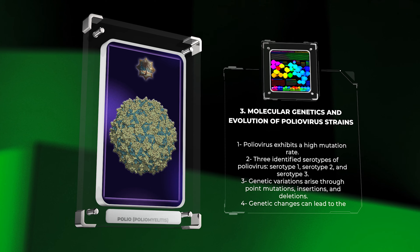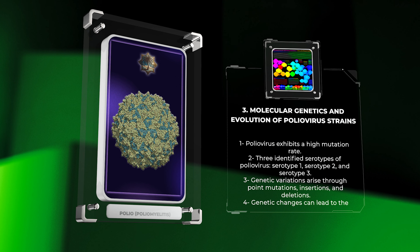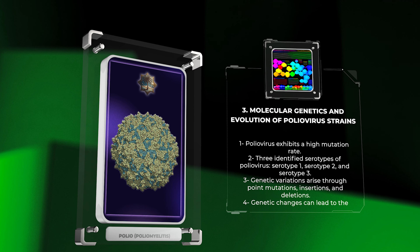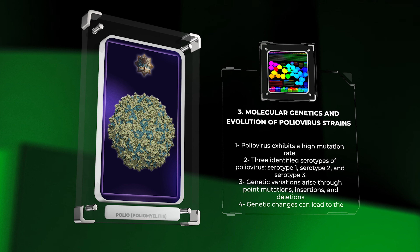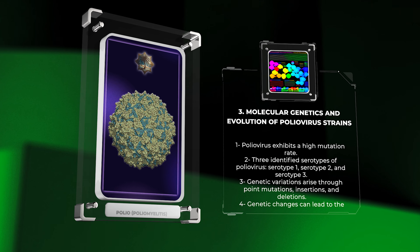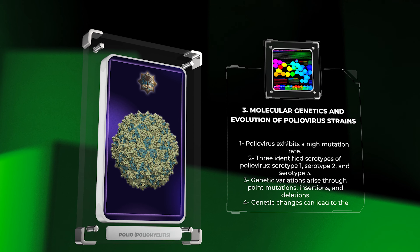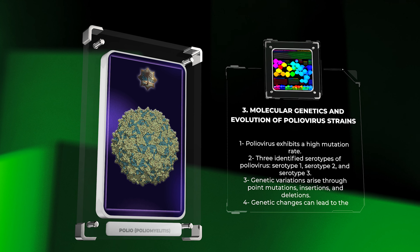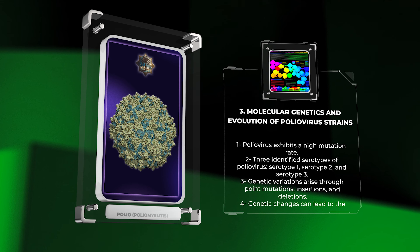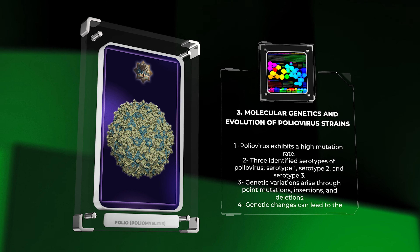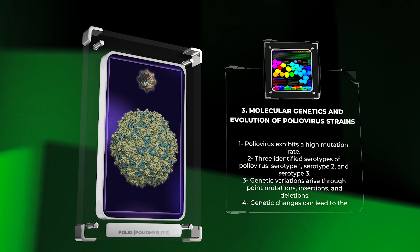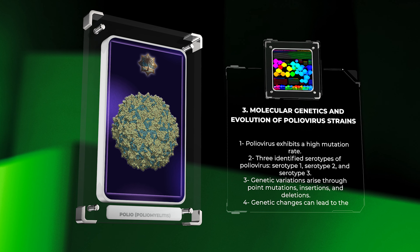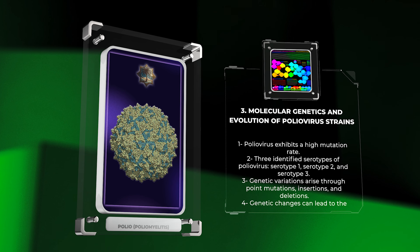While the genome sequence of these serotypes is highly conserved, genetic variations arise through point mutations, insertions, and deletions during replication. These genetic changes can lead to the evolution of virulent strains with altered antigenic properties, potentially impacting the efficacy of vaccines. It is crucial to monitor the genetic evolution of poliovirus strains to ensure that vaccines remain effective against circulating strains. By analyzing the molecular genetics of poliovirus strains, researchers can gain insights into viral evolution, transmission patterns, and potential vaccine challenges, aiding in the development of effective strategies to combat this infectious disease.